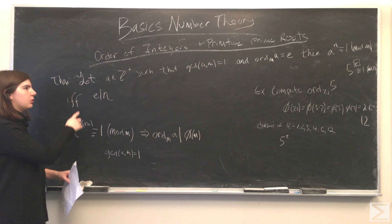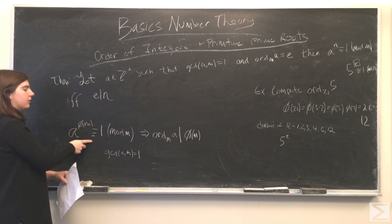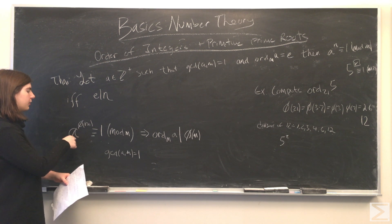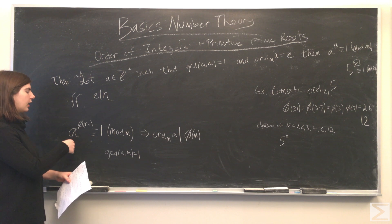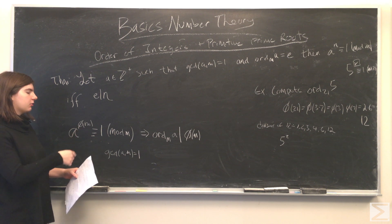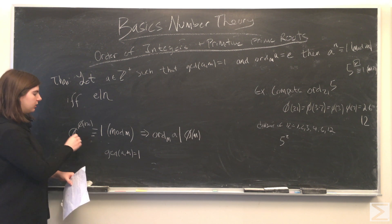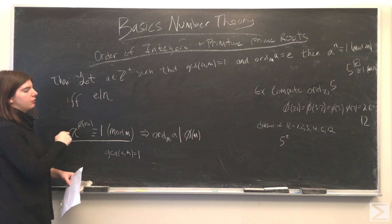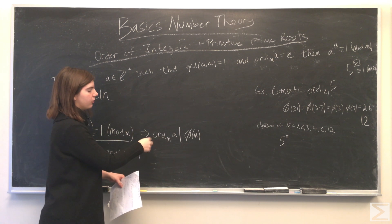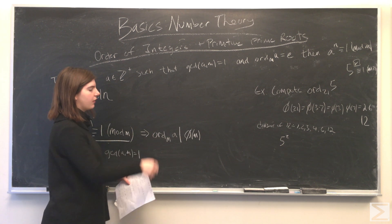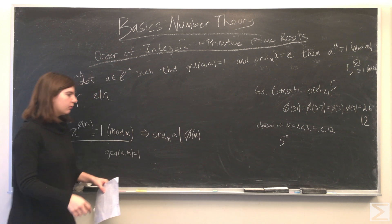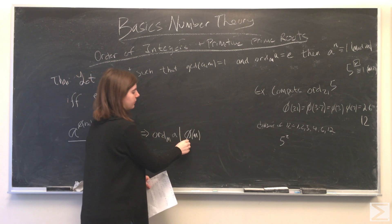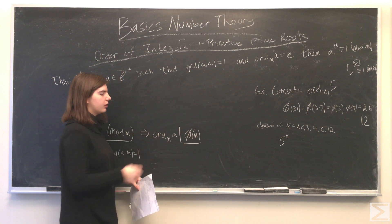From this theorem, we can derive Euler's theorem, which tells us that a to the phi of m is congruent to 1 mod m. And by this theorem, we can conclude that the order of a modulo m must divide phi of m, which means phi of m must be a multiple of the order.